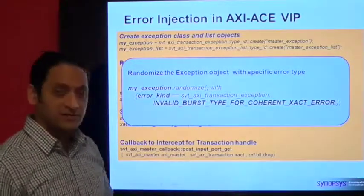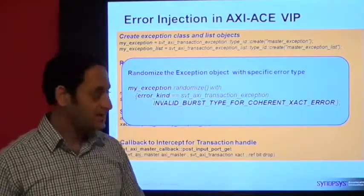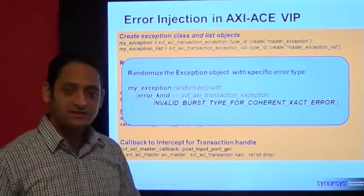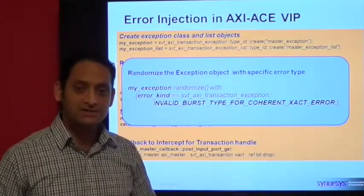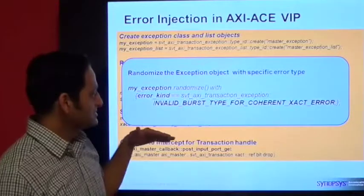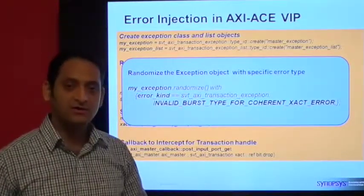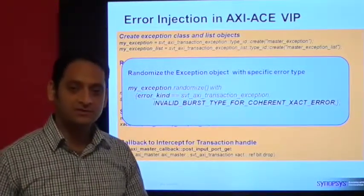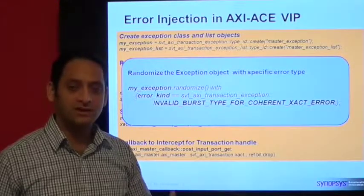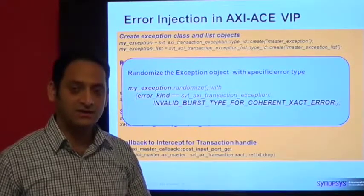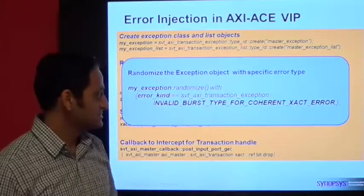After creating an object of exception type, you can randomize it either with a specific type of error constraint, or you can leave it open to generate all types, or pick any of the errors from the available pool of the error list.